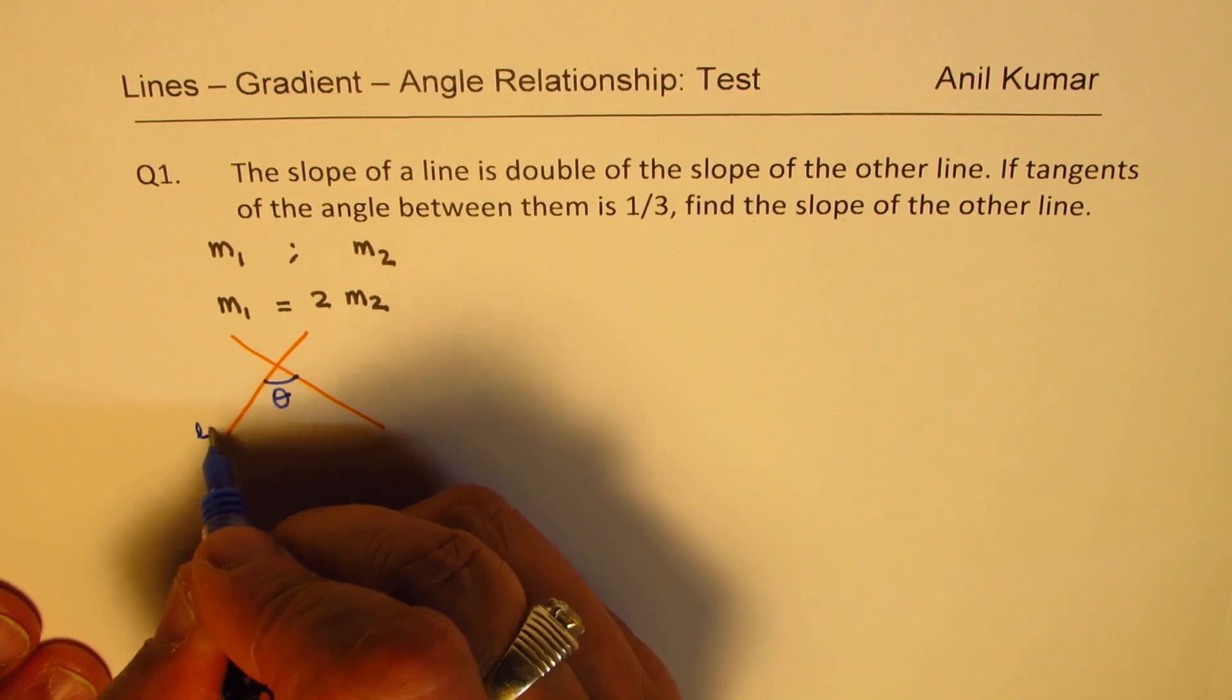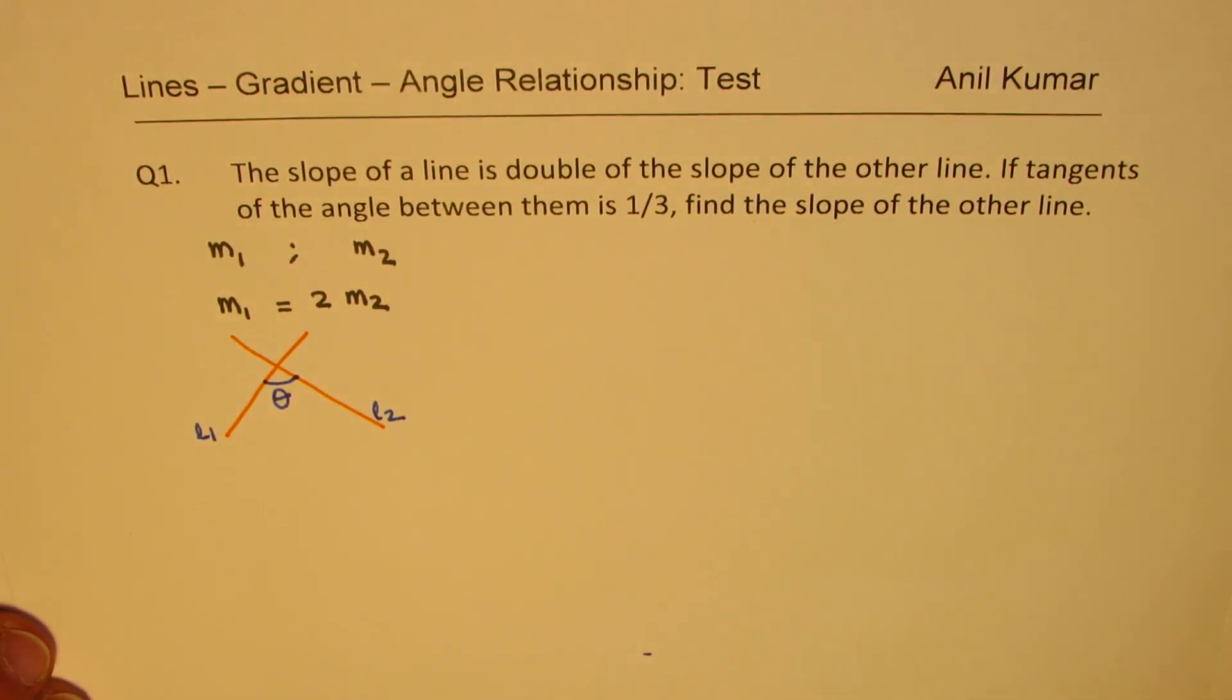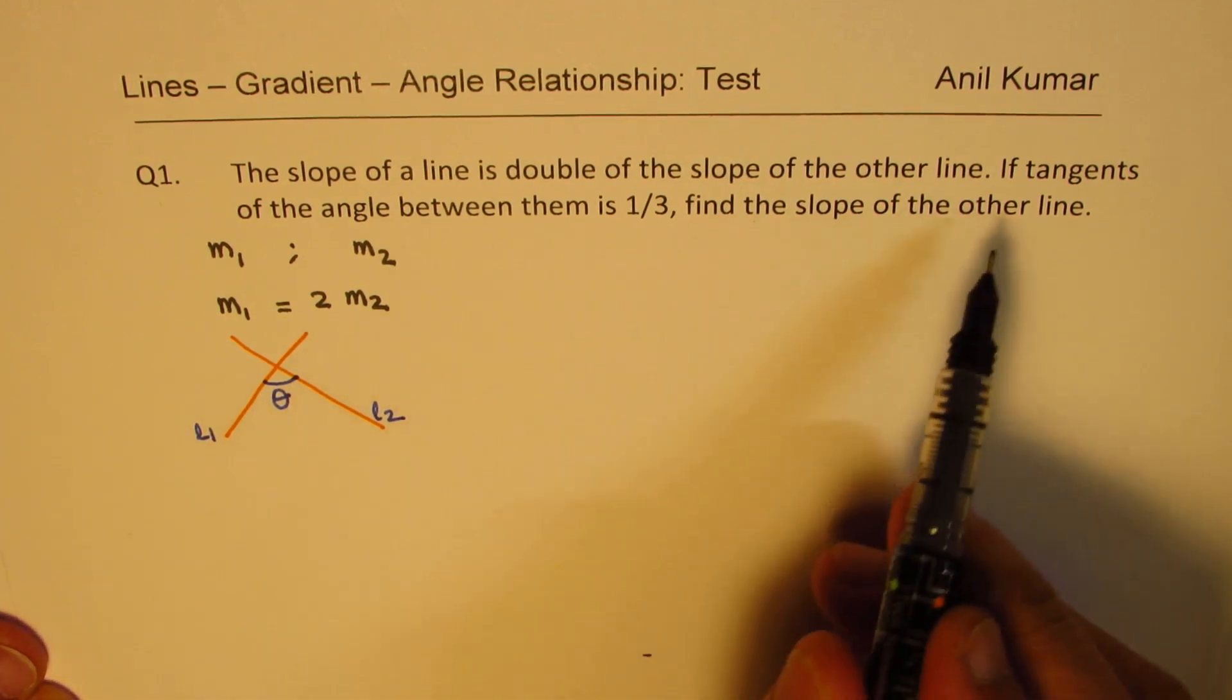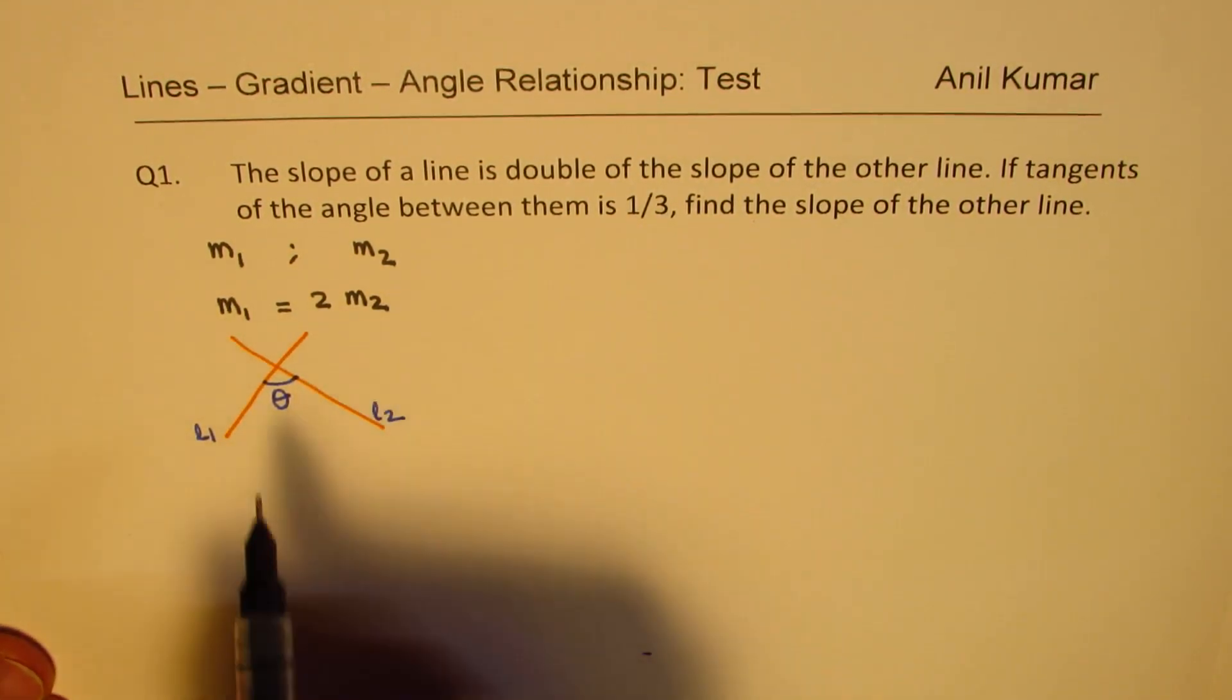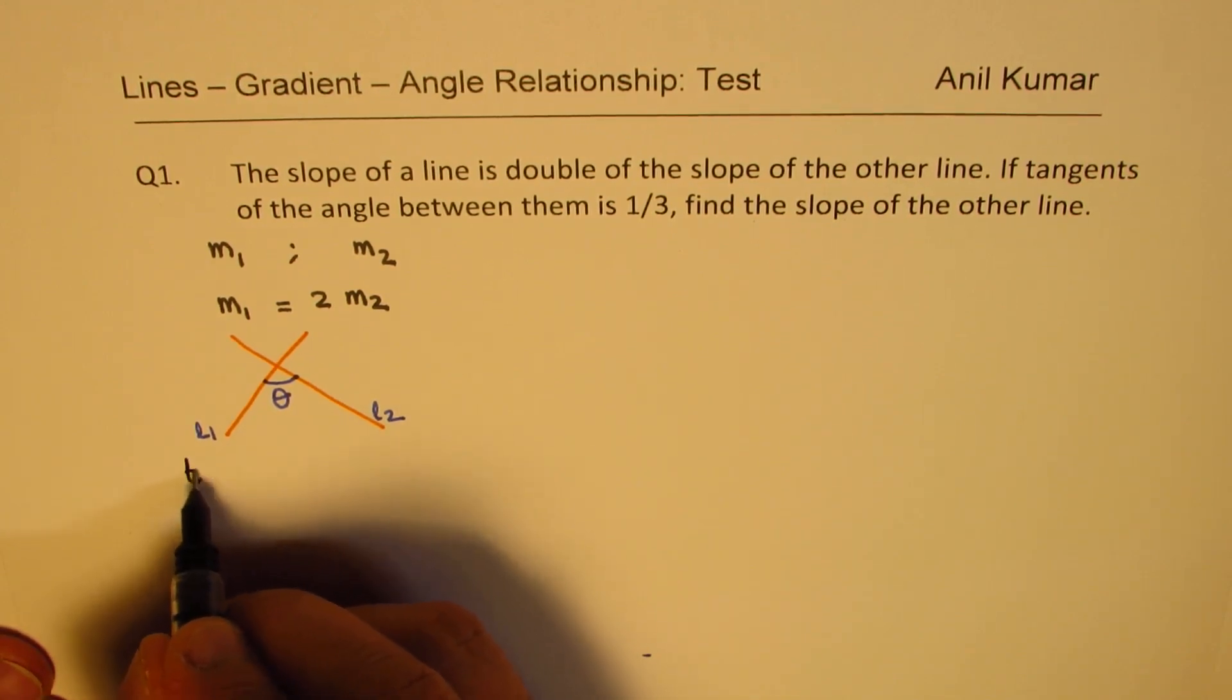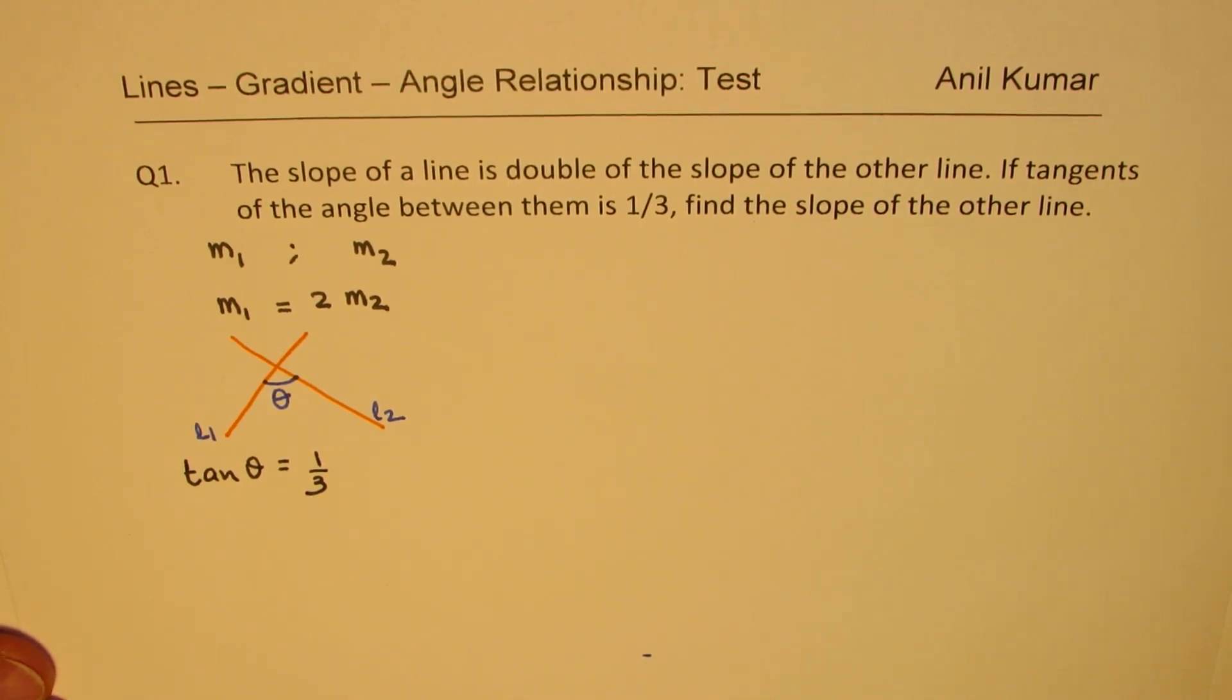Let's say this is line 1, this is line 2, and the angle between them is theta. Then it says the tangents of the angle between them is 1 over 3. So, we are saying that tan theta is equal to 1 over 3. That is given to us.